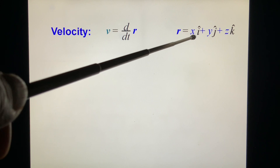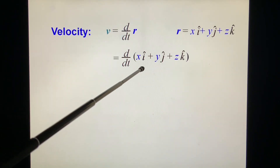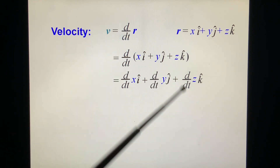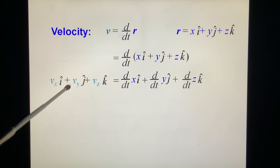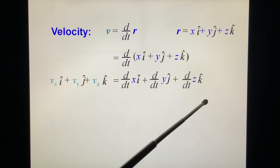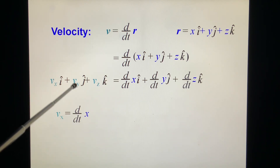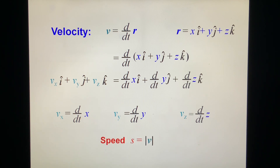Since r can be written as x·i + y·j + z·k, with x, y, z changing with time t, and since i, j, k are constants, we can rewrite v as (dx/dt)·i + (dy/dt)·j + (dz/dt)·k. Comparing with v = vx·i + vy·j + vz·k, we find vx = dx/dt, vy = dy/dt, vz = dz/dt — exactly similar to the one-dimensional situation. The speed is the magnitude: v = sqrt(vx² + vy² + vz²).